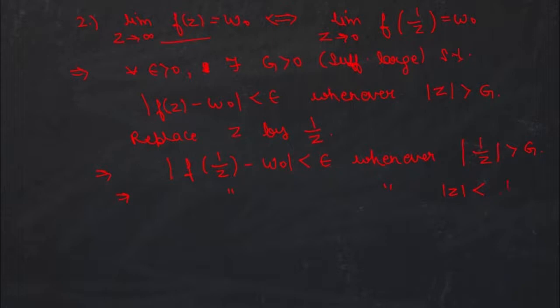Since g is sufficiently large, 1/g is sufficiently small. Therefore this means that the limit as z goes to 0 of f(1/z) is w₀, which is exactly the definition of the limit we have seen. Moving in the reverse direction gives the same steps, so these are equivalent conditions.